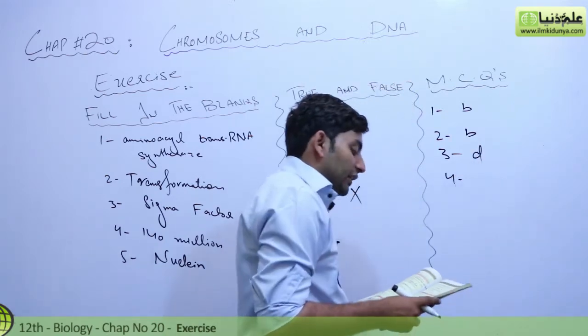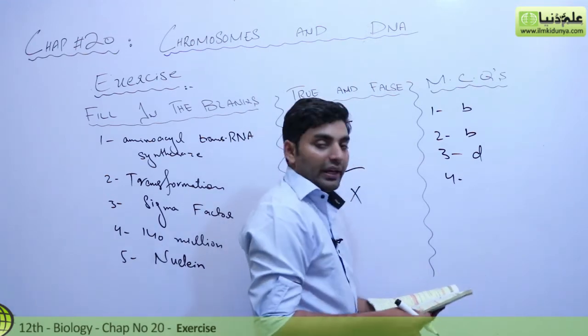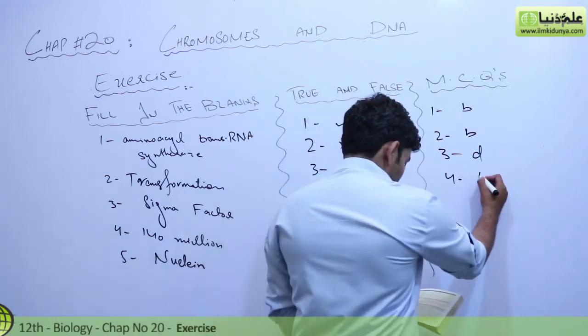Fourth one: In bacteria, the newly synthesized messenger RNA is released in cytoplasm, nucleus, mitochondria, or B and C. So this is B, cytoplasm.